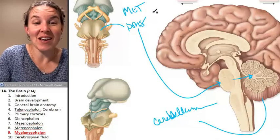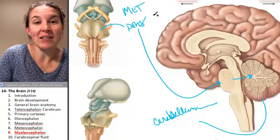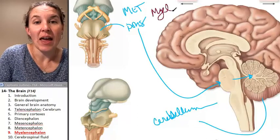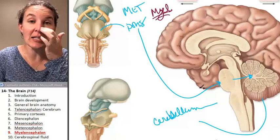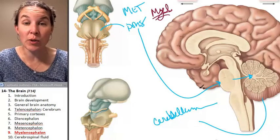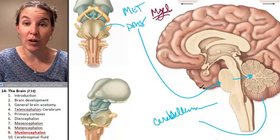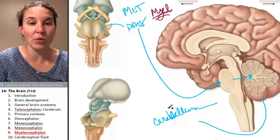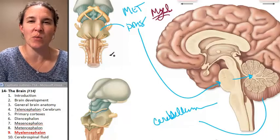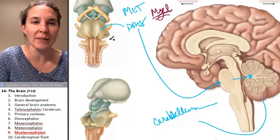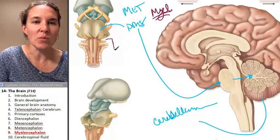Our last one is the myelencephalon. The myelencephalon is the most primitive part of your brain. You often hear it referred to as the reptilian brain. It's right here.